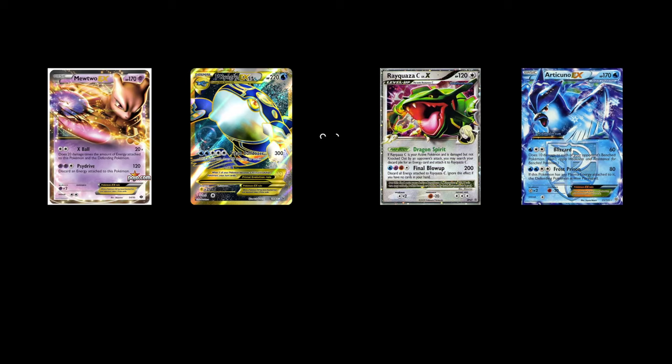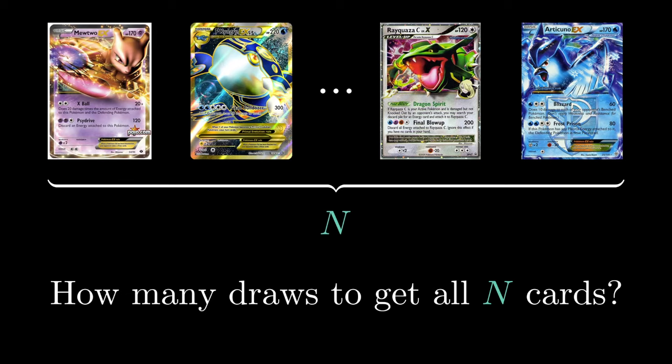Let's say that you're an aspiring card collector. There are N different types of cards and of course you want every single card. The way you collect cards is by opening packs. Each pack contains one card and is equally likely to get any single of the N cards. The question is, how many packs do you need to open to get every single card? This question is the Coupon Collector's Problem, a classic problem in probability theory.